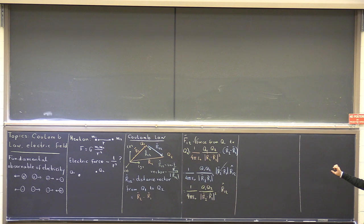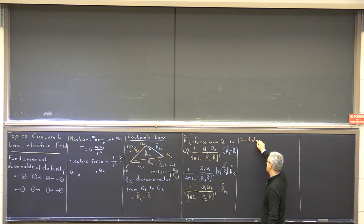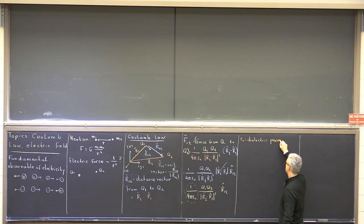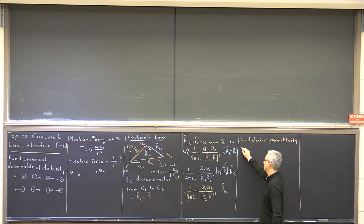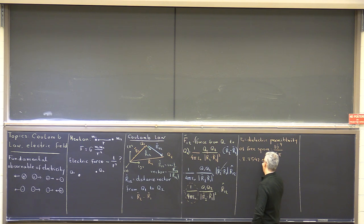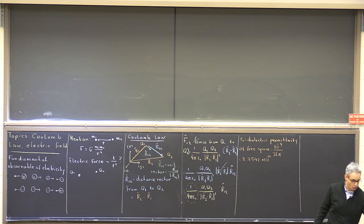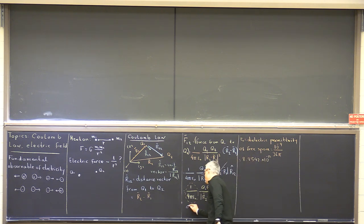This looks a little different than what you see in high school, which is more Q1 Q2 over R squared times a constant. The constant here invokes epsilon naught, the dielectric permittivity of free space, whose value is 10⁻⁹ over 36π, or 8.8542 times 10⁻¹². So if you compute 1 over 4π epsilon naught, you get 9 times 10⁹. The numerical value for this constant as a whole is 9 times 10⁹. That is Coulomb's law.